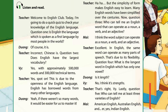Of course it is. Incorrect. Chinese is the language which is spoken by most people in the world. Question 2: Does English have the largest vocabulary? Yes, with approximately 500,000 words and 300,000 technical terms. Yes, spot on.